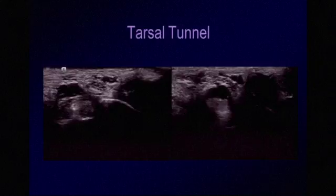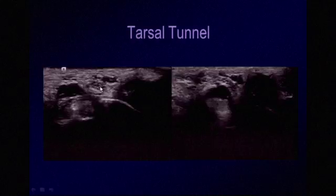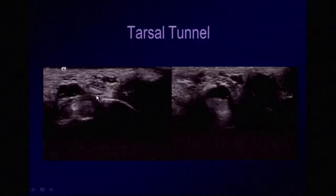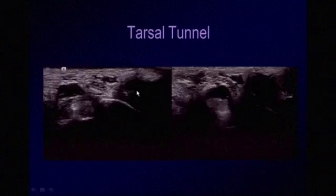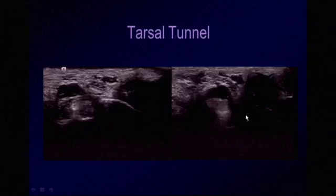The tarsal tunnel is an area where the nerve can become entrapped — analogous to carpal tunnel syndrome, where the median nerve is entrapped, here we are looking at entrapment of the tibial nerve. Here we see an anechoic to hypoechoic multilobulated structure in the region of the tarsal tunnel — this is a ganglion cyst. This patient felt pain especially when flexing their foot; with change in foot position, the ganglion shifts medially and compresses the adjacent tibial nerve.